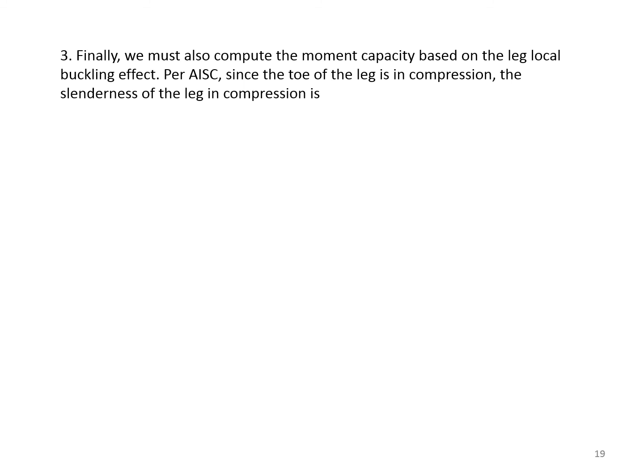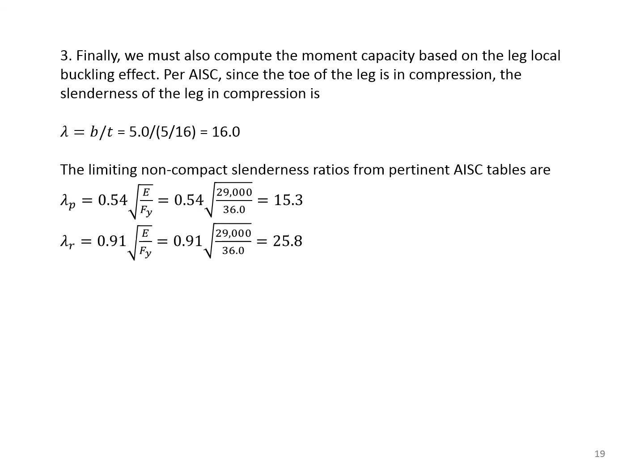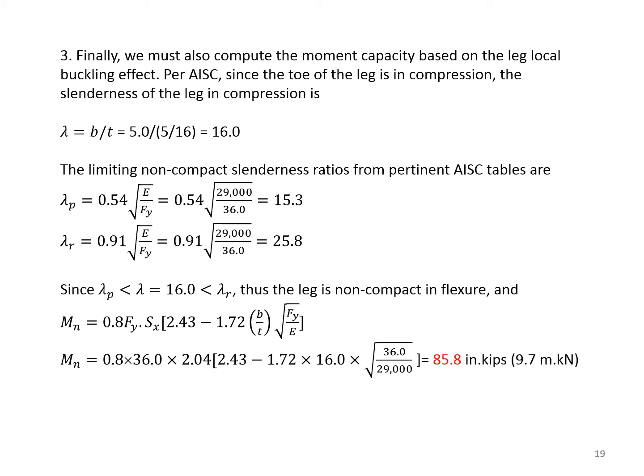Finally, we need to compute the third MN, and that is based on the local buckling of the leg of the angle. Per AISC, since the toe of the leg is in compression, the slenderness of the leg in compression is λ = B/T. 5 divided by 5/16 of an inch is 16. There are two limits of lambda, λP and λR. Based on AISC, λP is 15.3, λR is 25.8. Because our lambda for the section is 16, as in between the two, therefore, the MN is from the equation that you see there. Plugging the numbers in that equation, we finally get our third value for MN, which is 85.8.